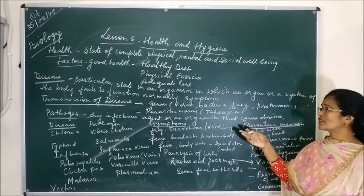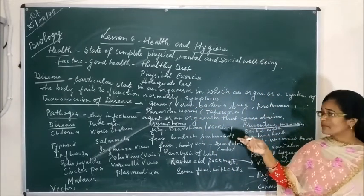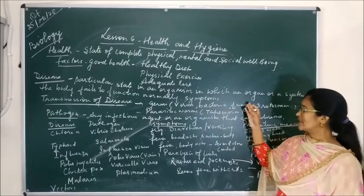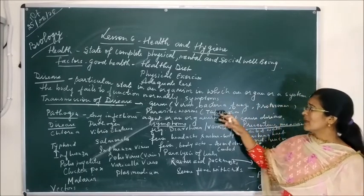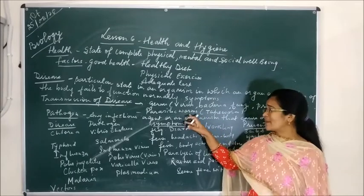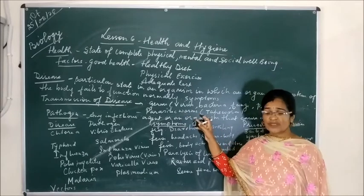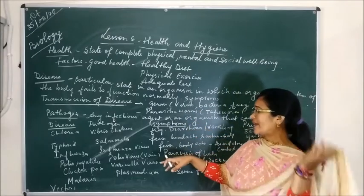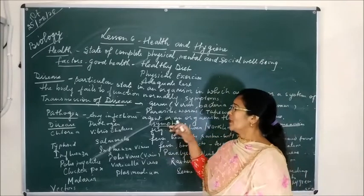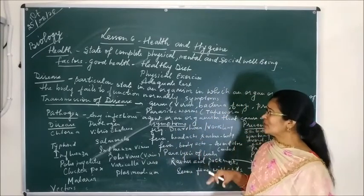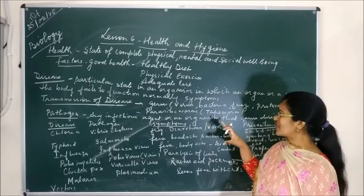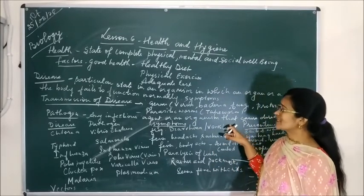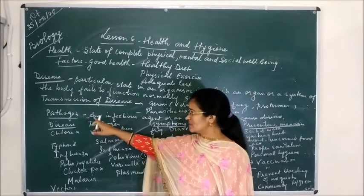So these three are mainly the agents through which disease is transmitted: by germs such as virus, bacteria, fungi, and protozoans; by parasites that is parasitic worms; and third, by vectors. These infectious agents or organisms which cause disease are called pathogens.